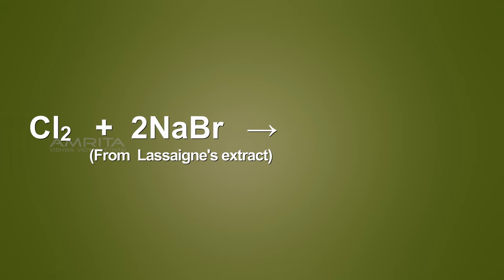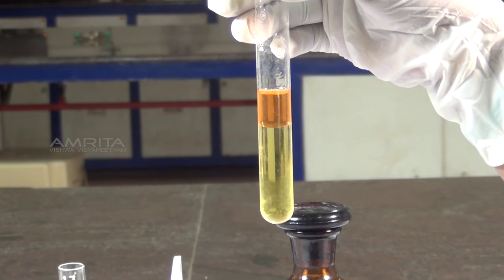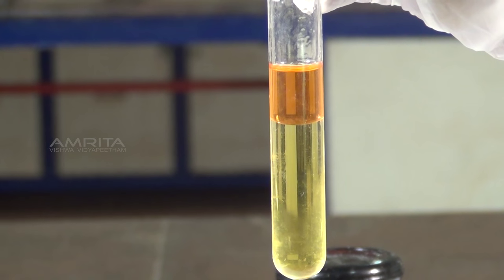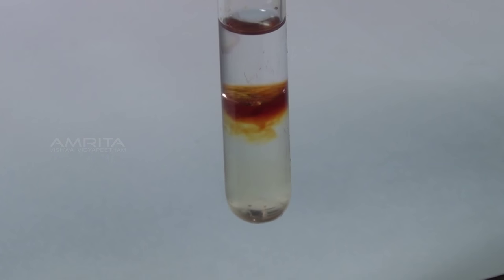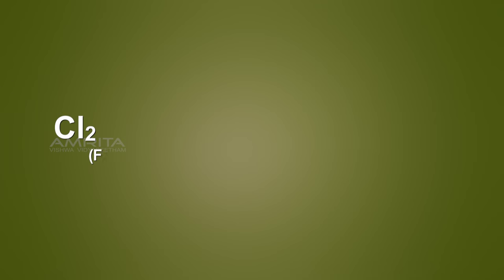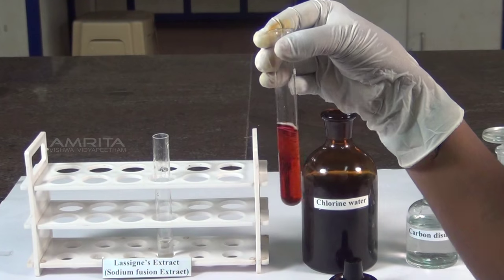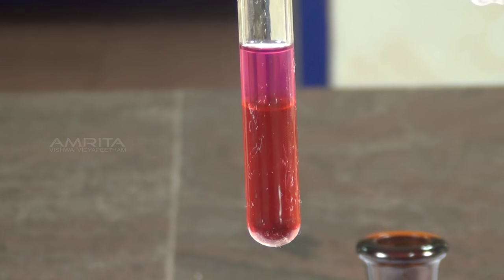If the organic compound contains bromine, the sodium bromide formed during fusion is oxidized to bromine, which is dissolved in carbon disulphide and imparts an orange colour to the carbon disulphide layer. If the organic compound contains iodine, the sodium iodide formed during fusion is oxidized to iodine, which is dissolved in carbon disulphide and imparts a violet colour to the carbon disulphide layer.